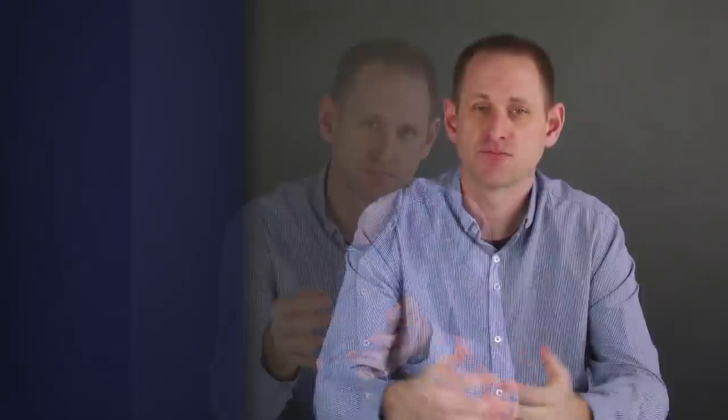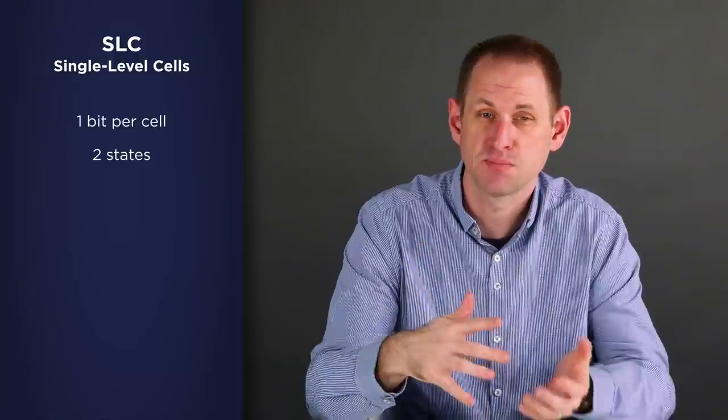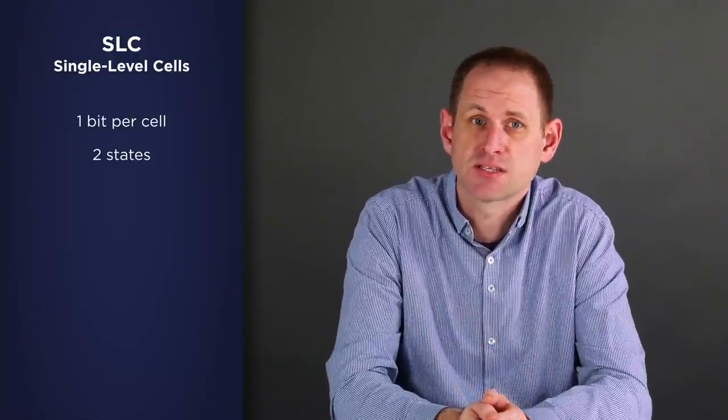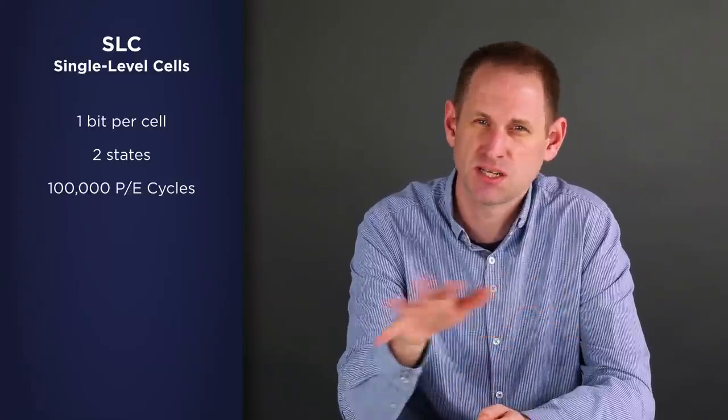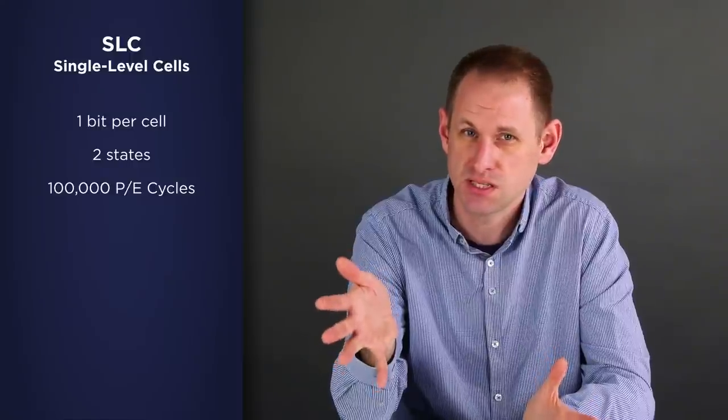The actual number of writes that are possible depends on the type of NAND flash that's being used. And there are currently four types. First, we have SLC or single level cells that can store one bit of data per cell. So that means a one or a zero. And this type of NAND cell has the longest lifespan, with typically each cell being capable of something like 100,000 PE cycles.